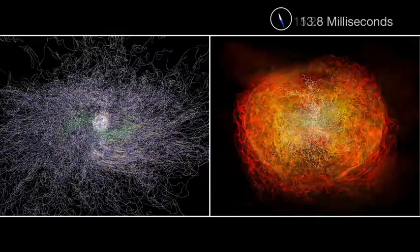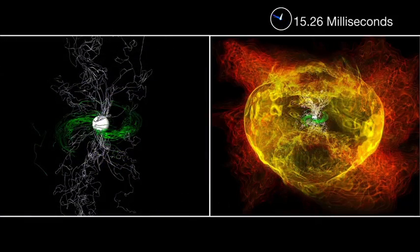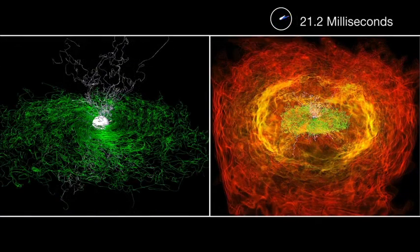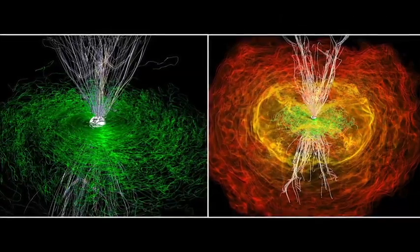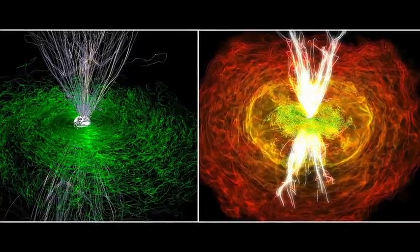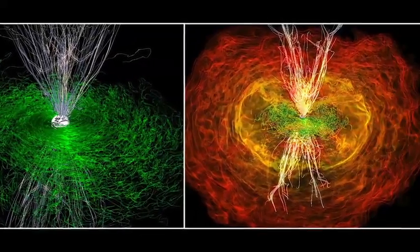Amidst this incredible turmoil, the white field has taken on the character of a jet, although no matter is flowing through it when the simulation ends. Showing that chaotic magnetic fields suddenly become organized as jets provides scientists with the missing link.